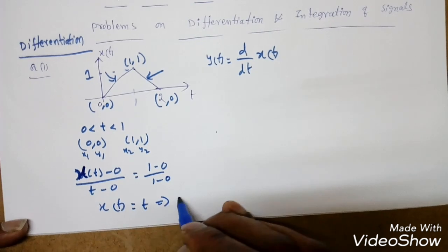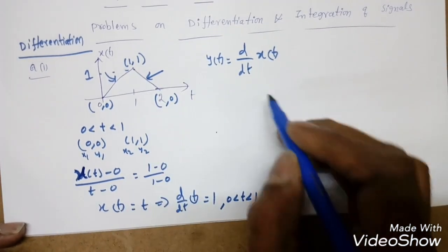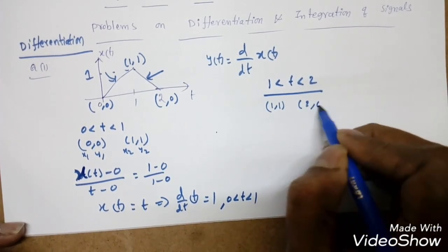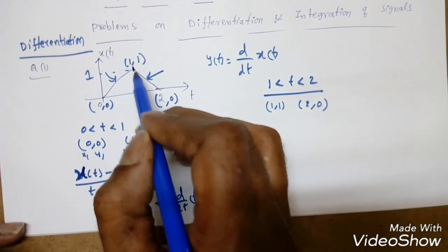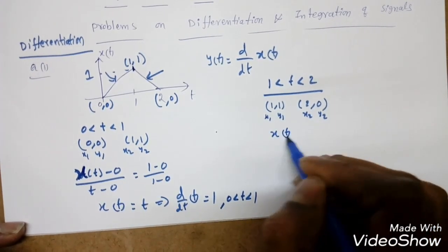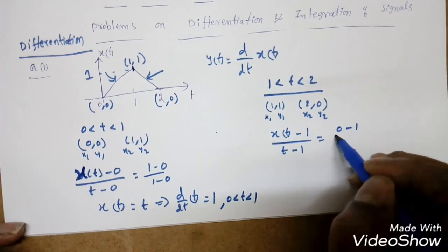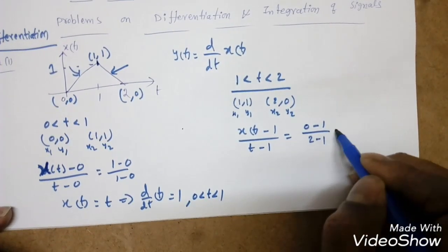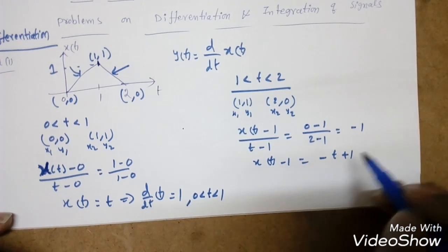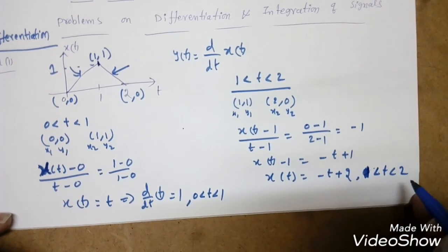Differentiating t gives 1, so d/dt of x(t) = 1 for 0 < t < 1. For 1 < t < 2, the points are (1,1) and (2,0). Using the line equation, we get a slope of -1, so x(t) = -t + 2 for 1 < t < 2.